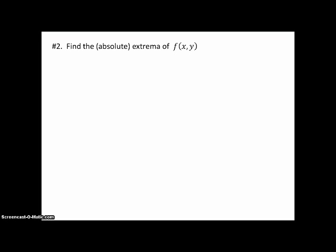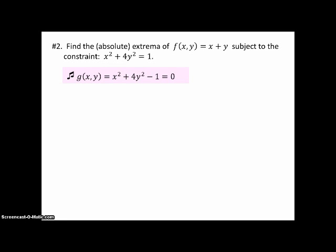Problem 2: Find the absolute extrema of f(x,y) = x + y, subject to the constraint x² + 4y² = 1. We set up our g function by bringing the 1 over. The partial of f with respect to x is 1, which equals lambda times 2x, giving lambda = 1/(2x). The partial of f with respect to y is also 1, which equals lambda times 8y, giving lambda = 1/(8y). Setting these equal and cross-multiplying, x must equal 4y.